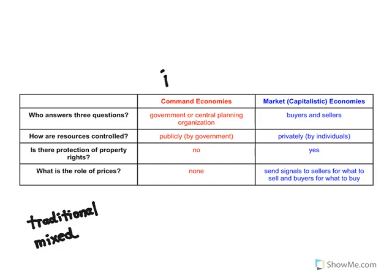An example of a command economy is North Korea in the modern day. In the abstract, a command economy actually sounds like a pretty good idea — the government can decide who needs what, and every person can get exactly what they need. But command economies are rife with corruption, because when you put all the resources and all the power in the hands of a small group of people, they quickly realize they can keep it all for themselves and give the people very little. That's what actually goes on in North Korea, where a small group at the top has all the power, wealth, and resources, while the vast majority live in abject poverty.